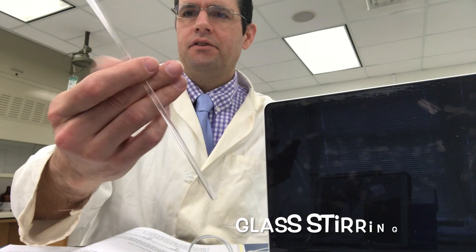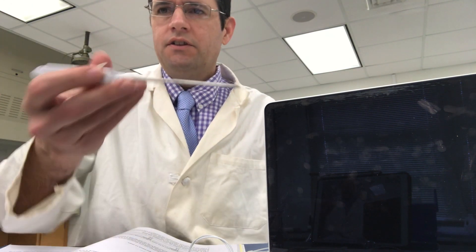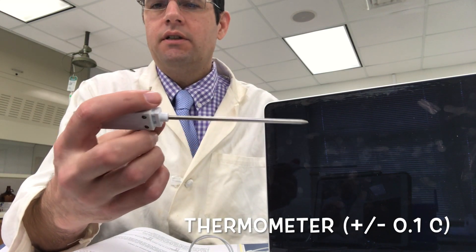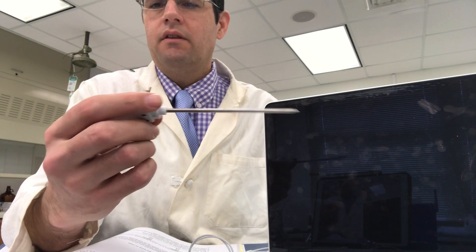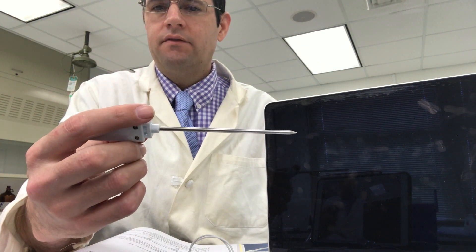This is a glass stirring rod to help stir the solution when you first mix it. The first step you'll need to do is record room temperature with a thermometer, preferably a digital thermometer to the nearest tenth of a degree.